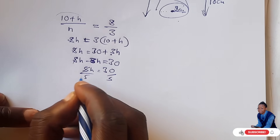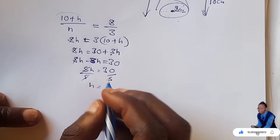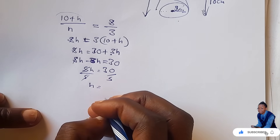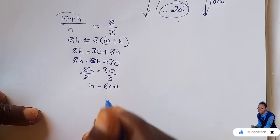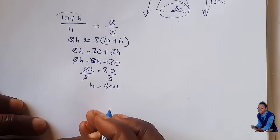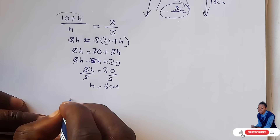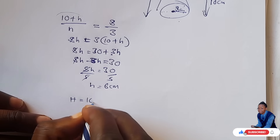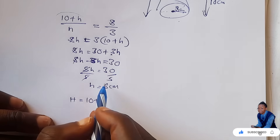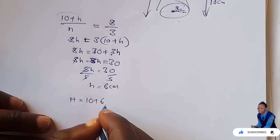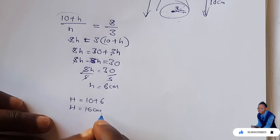So 5h equals 30, divide both sides by 5. Therefore the height of the smaller cone h equals 6 centimeters. The height of the larger cone is capital H equals 10 plus 6, which is 16 centimeters.